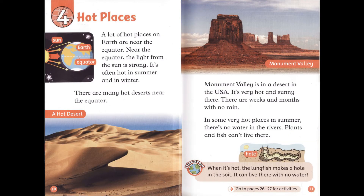Chapter 4: Hot Places. A lot of hot places on Earth are near the equator. Near the equator, the light from the sun is strong. It's often hot in summer and in winter. There are many hot deserts near the equator. Monument Valley is in a desert in the USA. It's very hot and sunny there. There are weeks and months with no rain.